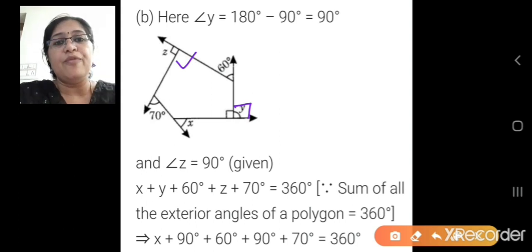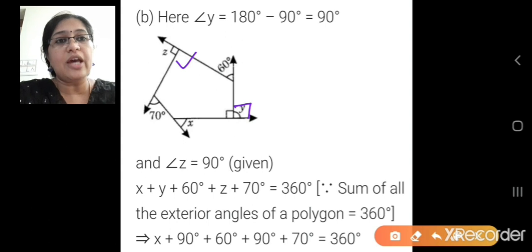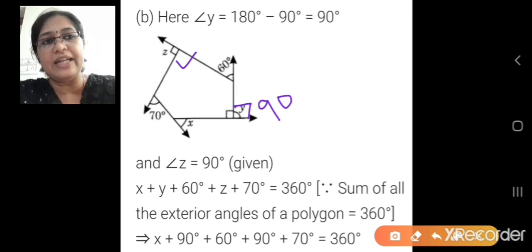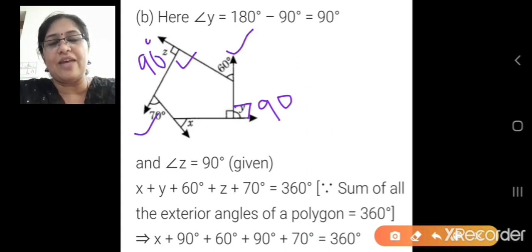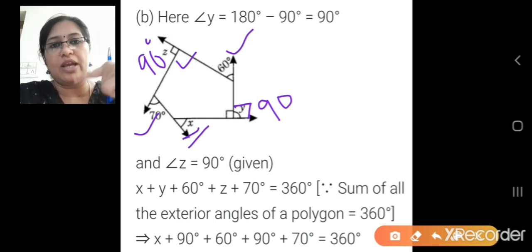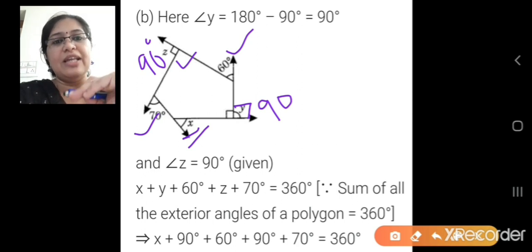In this problem we are using the exterior angle property — that is, the sum of the exterior angles of whatever shape it may be. We discussed in the last class that for a pentagon, hexagon, or triangle, the sum of exterior angles is 360 degrees. So here the sum of exterior angles will also be 360 degrees. You will add all the angles plus x equal to 360 and subtract from 360 to get x.